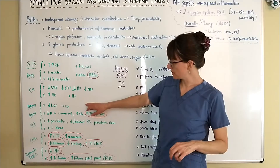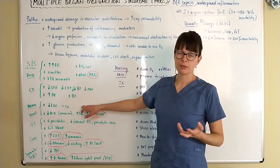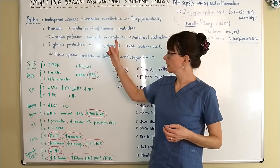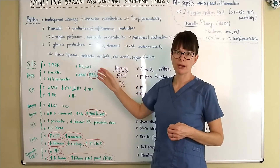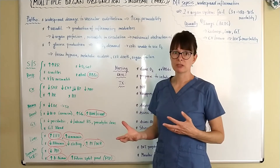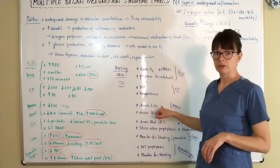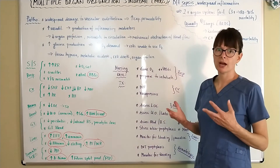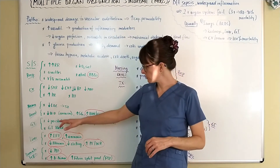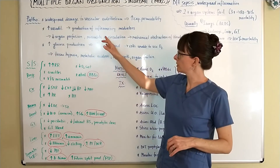For the neurological system, there will be decreased level of consciousness, and the patient may be at risk for seizures — not only from hypoperfusion of the brain but also because electrolyte imbalances may occur, specifically sodium imbalances. We assess the patient's level of consciousness carefully to detect any changes.